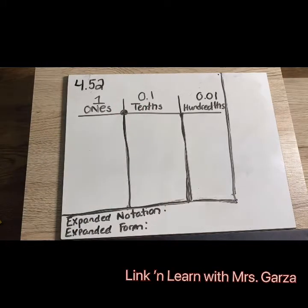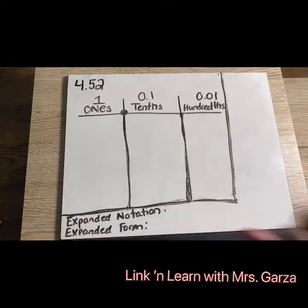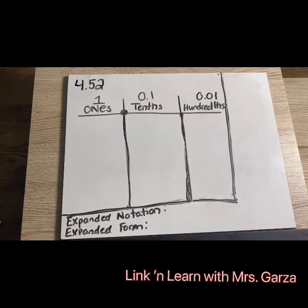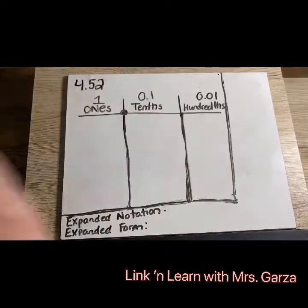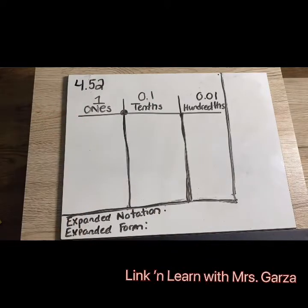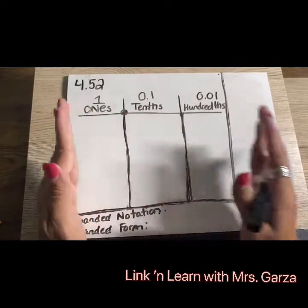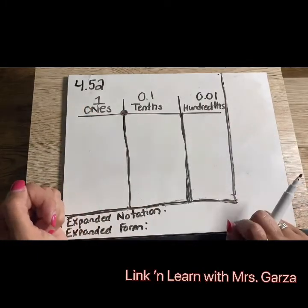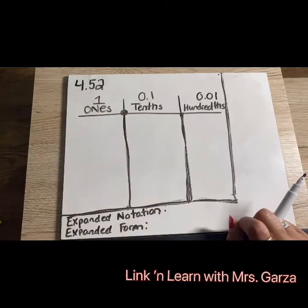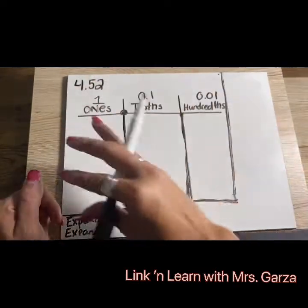So ones is represented with just the one, then we have our decimal point. Then we have the tenths column — think of like 10 cents, a dime — it's 0.1. Then we have our hundredths: 0.01. Think of pennies. You need 100 pennies to be one whole. You need 10 tenths to be one whole, one dollar. So remember, everything to the right is going to be parts of the whole and everything to the left is going to be actual wholes. These parts are trying to get to the whole.